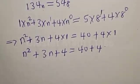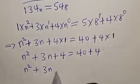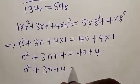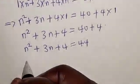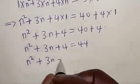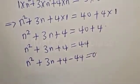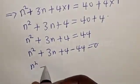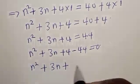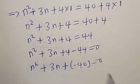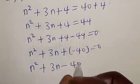Then we have n squared plus 3n plus 4 is equal to 40 plus 4, that is 44. Then we have n squared plus 3n plus 4 minus 44 is equal to 0. Therefore, we have n squared plus 3n minus 40 is equal to 0.